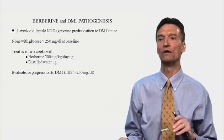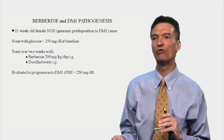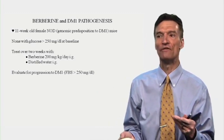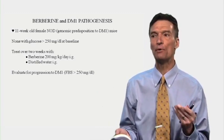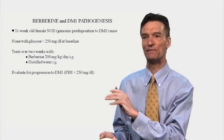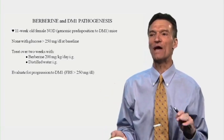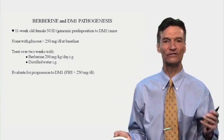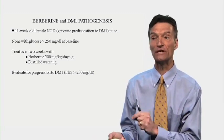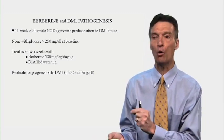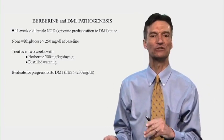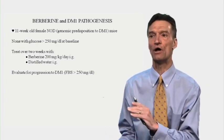Here we're going to look at 11-week-old female NOD mice — genetically abnormal mice predisposed to type 1 diabetes. Over time they will all go into type 1 diabetes. At the time of the study, none were frankly diabetic; their sugar was not above 250. You're going to treat them over 2 weeks with berberine or distilled water and evaluate for progression to type 1 diabetes, which is felt to be inevitable in the NOD mice.